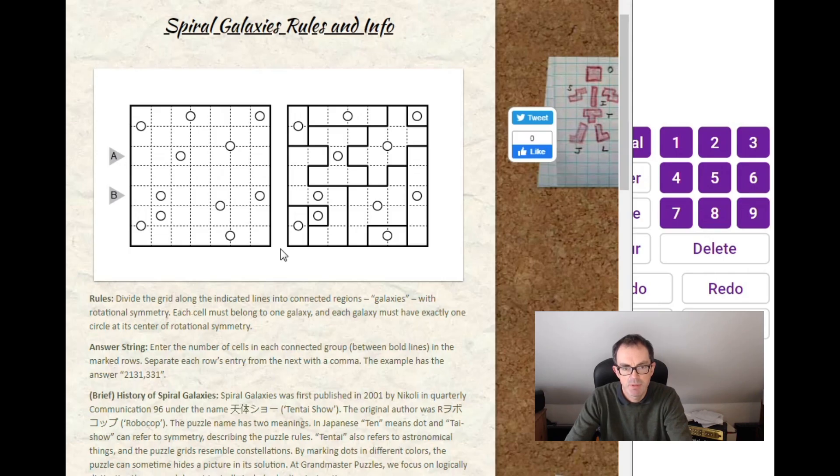Some of you may have come across this puzzle under the name Tentai Sho, which is its Japanese name. In the Japanese version, it works exactly the same way except some of the circles are black circles. When you finish the puzzle, you can color in all the regions that have a black circle in them and it creates a picture. If you enjoy this puzzle and haven't tried either Spiral Galaxies or Tentai Sho before, just do a search on the internet and you'll find some examples. Some of them are really cool.